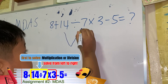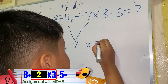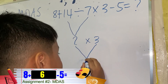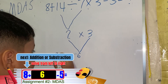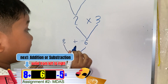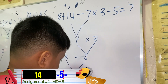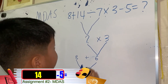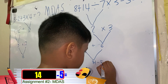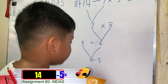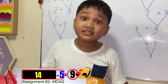14 divided by 7 equals 2, times 3 equals 6. And then bring down the 8. 8 plus 6 equals 14. Then bring down the minus 5. Did you get the correct answer?